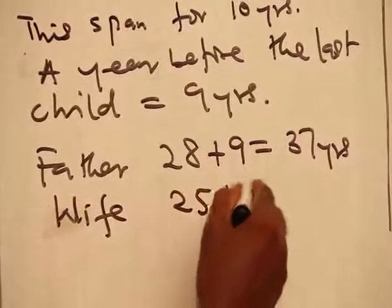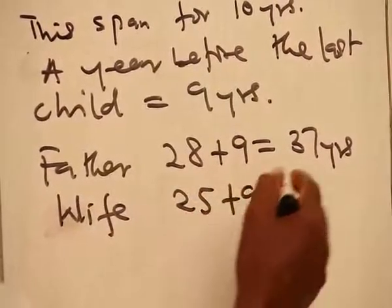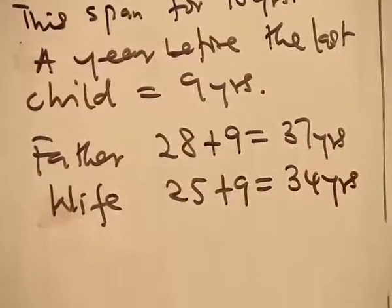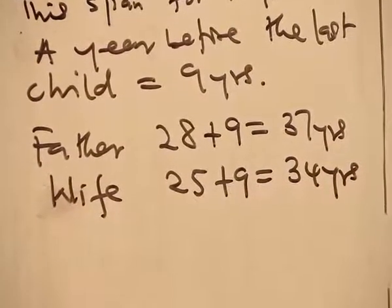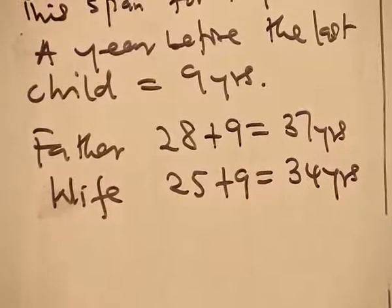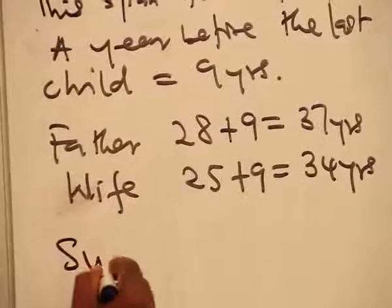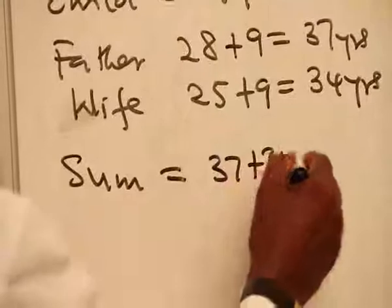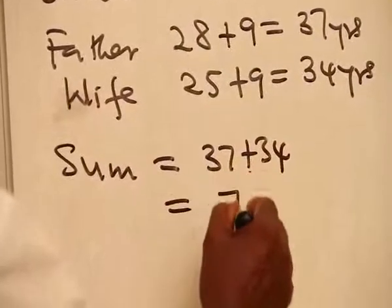The wife was 25 plus another 9 which would give us 34 years. The sum of their ages, so the sum will be equal to 37 plus 34, and that is 71 years.